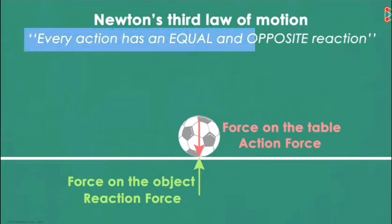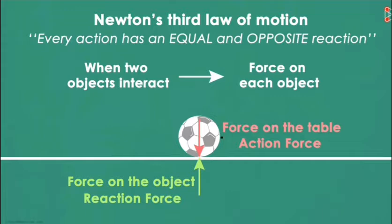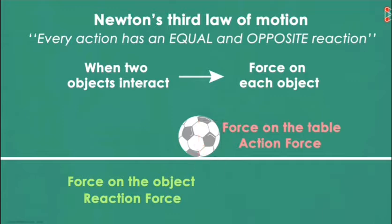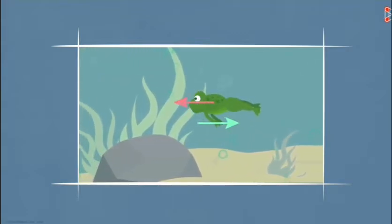Every action has an equal and opposite reaction. It means that when two objects interact, there is a force on each object. The magnitude of force on the first object equals the magnitude of force on the second one. The direction of force on the first object is opposite to the direction of force on the second one. For example, while a frog is swimming, it pushes the water back, and the water pushes its body forward.